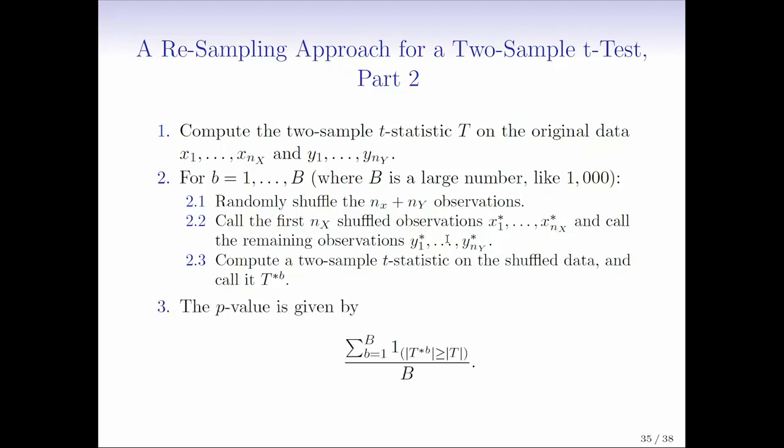And then after we've done this capital B times, like 1,000 times, we're going to compute a p-value. And the p-value is just the fraction of the time that the t-statistic on the shuffled data exceeded in absolute value the t-statistic on the real data. So what does this notation mean, Gareth?